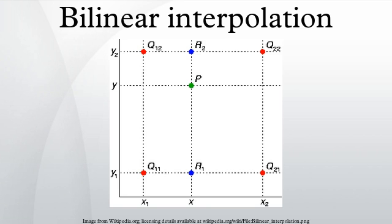The interpolant is linear along lines parallel to either the x or the y direction, equivalently if x or y is set constant. Along any other straight line, the interpolant is quadratic. However, even if the interpolation is not linear in the position, it is linear in the amplitude, as it is apparent from the equations above, where the coefficients bj, j equals 1-4, are proportional to the value of the function f.